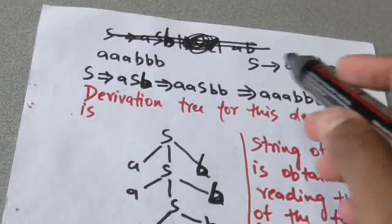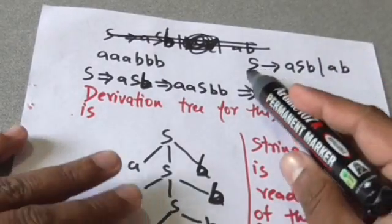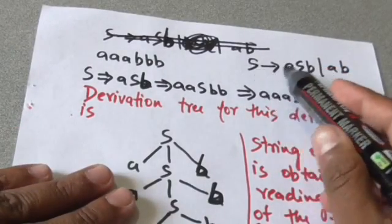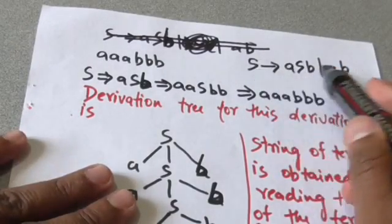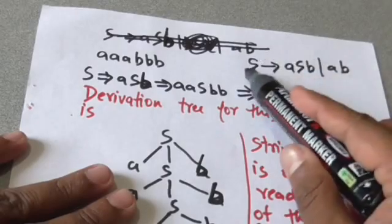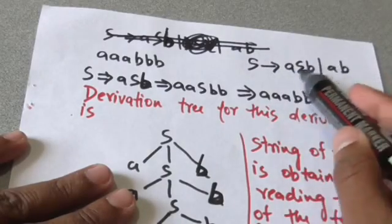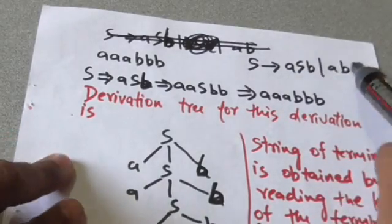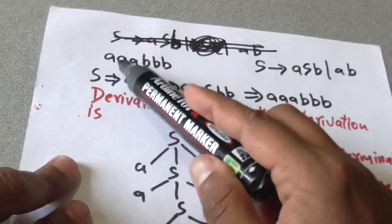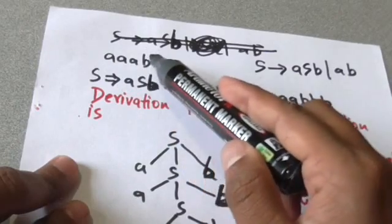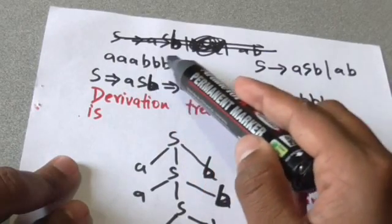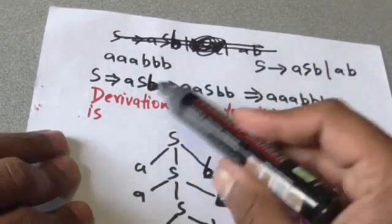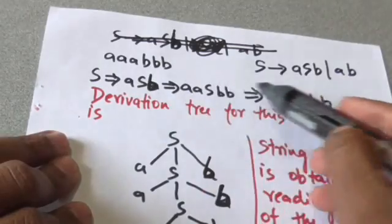Now suppose there is a grammar whose production rules are: S derives aSb, or S derives ab. There is a string a a a b b b b, and now we will show the derivation of this string using these production rules.